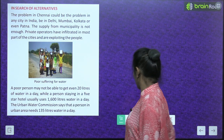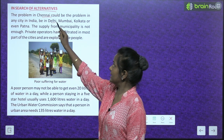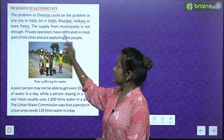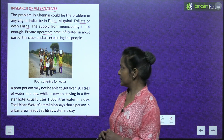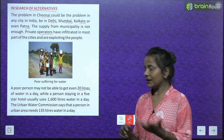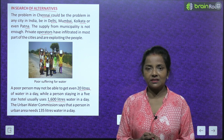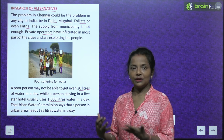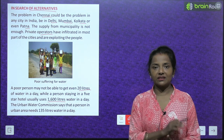The problem in Chennai could be the problem of any city in India — be it Delhi, Mumbai, Kolkata, or even Patna. The supply from the municipality is not enough. Private operators have infiltrated most parts of the cities and are exploiting people. A poor person may not be able to get even 20 litres of water in a day, while a person staying in a 5-star hotel usually uses 1,600 litres of water in a day.